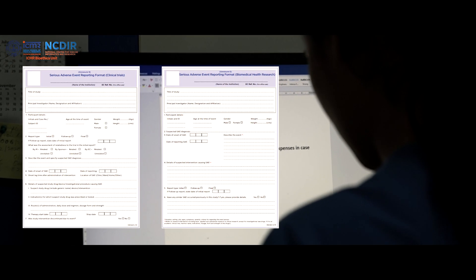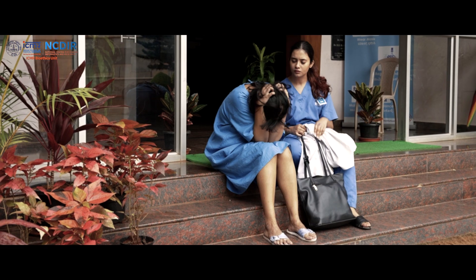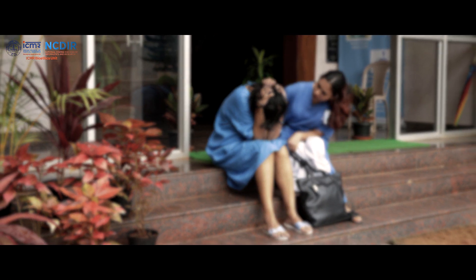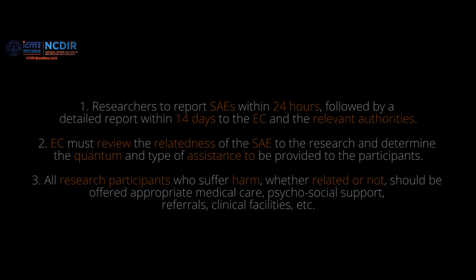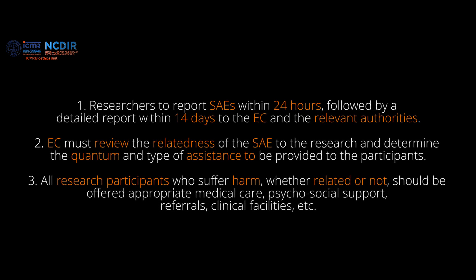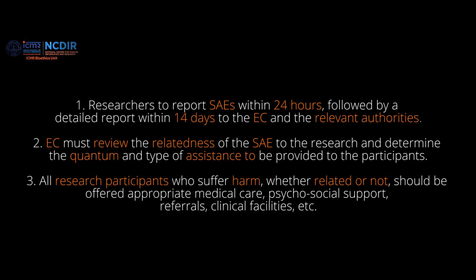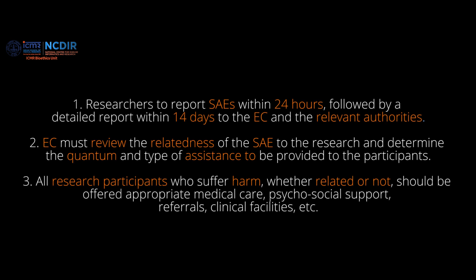It should be understood that the research proposal should have an inbuilt provision for mitigating research-related harm. Research participants who suffer direct physical, psychological, social, legal, or economic harm as a result of their participation are entitled, after due assessment, to financial or other assistance to compensate them equitably for any temporary or permanent impairment or disability. Researchers must report SAEs within 24 hours, followed by a detailed report within 14 days to the EC and relevant authorities. The EC must review the relatedness of the SAE to the research and determine the quantum and type of assistance to be provided.